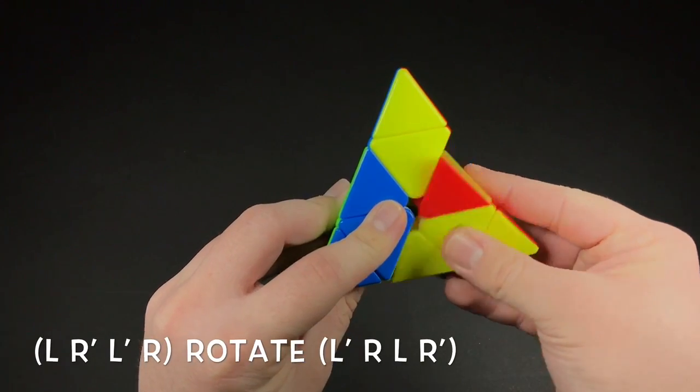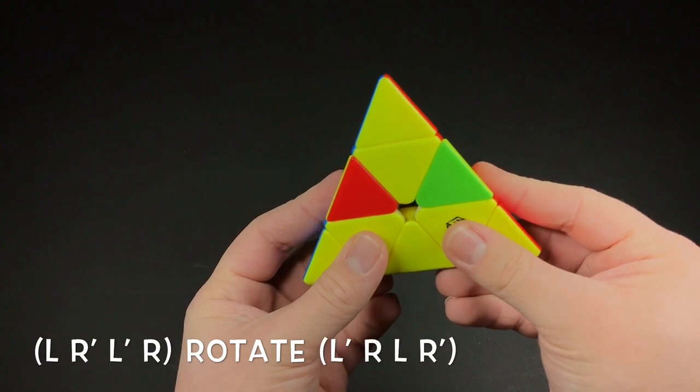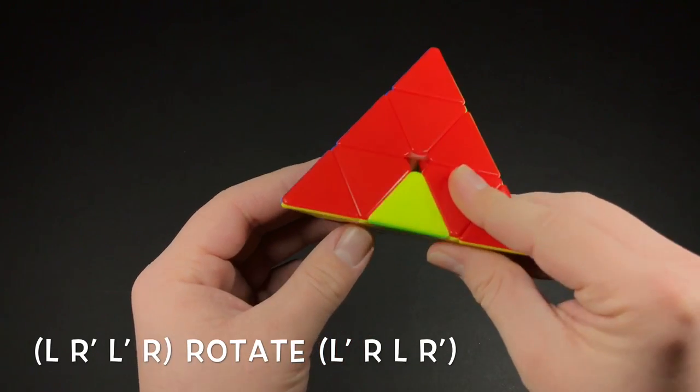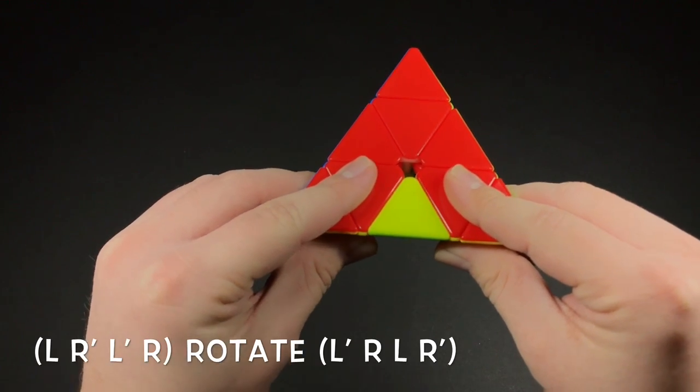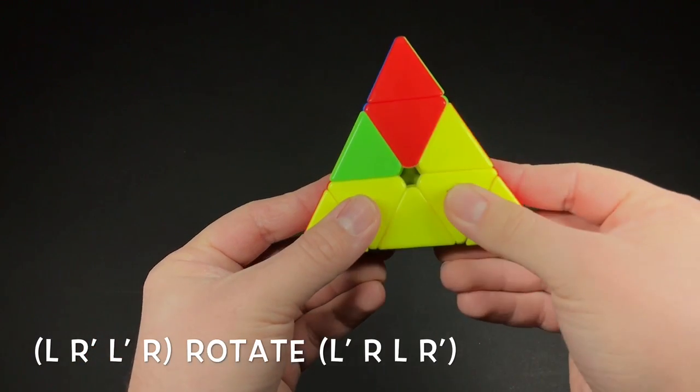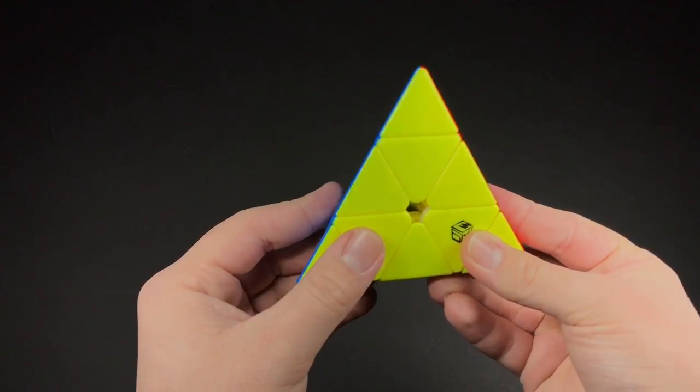So you go left down, right down, left up, right up. And then you do kind of a rotation to this side, and then grab this top corner. Go left up, right up, left down, right down. And that'll solve it.